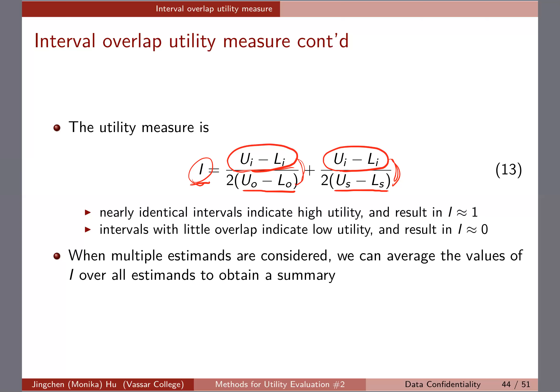This utility measure helps us make sure that we can report this, and especially if you're thinking about using different synthesis models to deal with the same problem and you want to compare across different models, those will be important measures to check how you're doing. Lastly, you can do interval overlap for other estimates as well. If you have multiple estimates, you can just average the values of I.